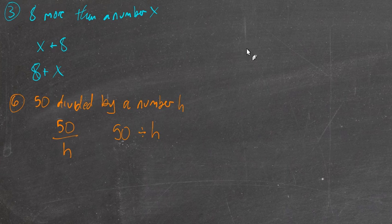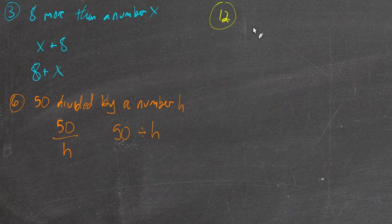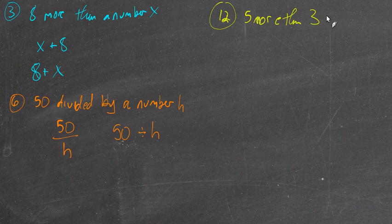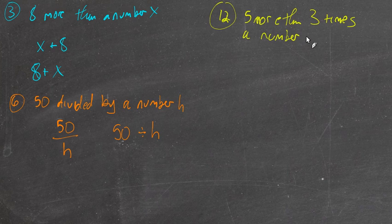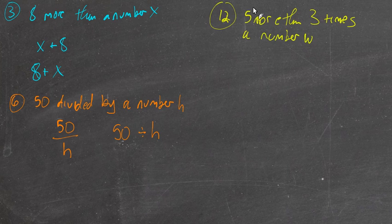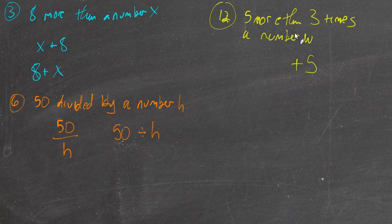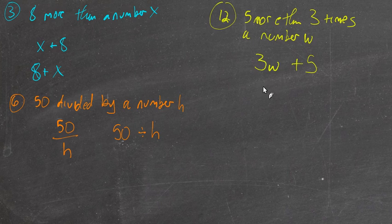Next, number 12. We've got a couple things going on here. 5 more than 3 times a number w. So I hear 5 more and I think, you know, 5 more, take something and add 5 to it. 5 more than something. The something is 3 times a number w. So we have a number w, we multiply it by 3. So that's 3 times a number w and 5 more than that, so you just add 5.